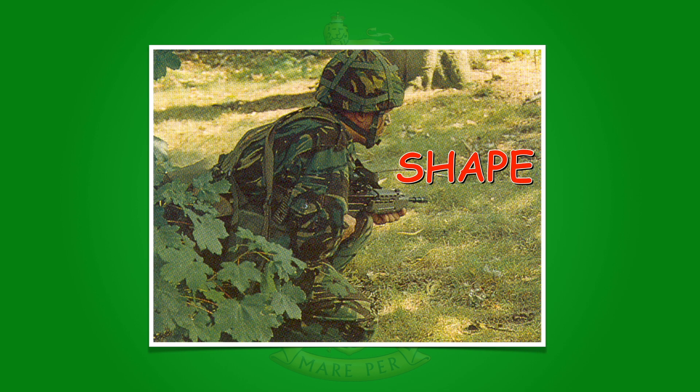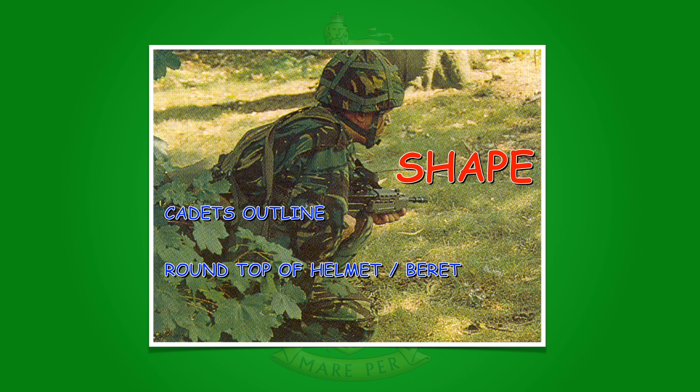Let's go through the factors in a bit of detail. Shape. Some things can be recognized instantly by their shape, particularly if it contrasts with the surroundings. In this example there are three easily distinguishing shapes which require disguise for concealment: the outline of the cadet, the round top of the helmet or beret the cadet is wearing, and the hard outline of the helmet brim - those all particularly stand out.